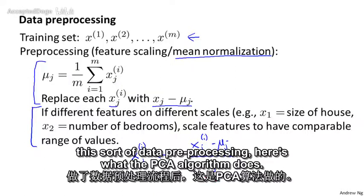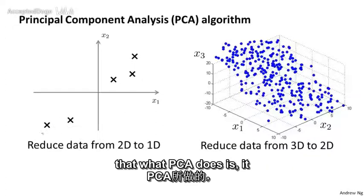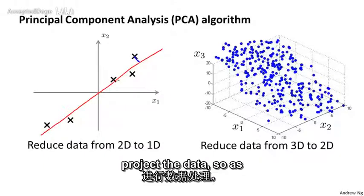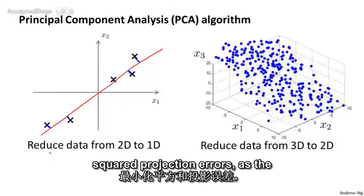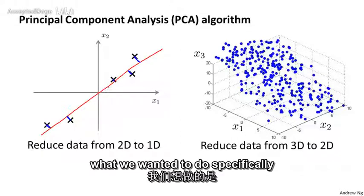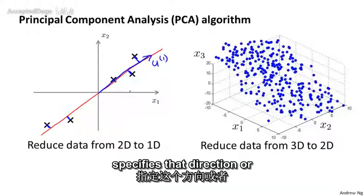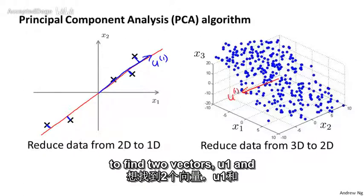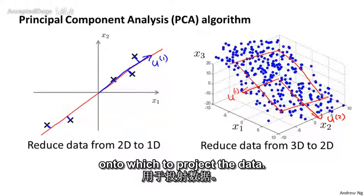Having done this data preprocessing, here's what the PCA algorithm does. PCA tries to find a lower dimensional subspace onto which to project the data, so as to minimize the squared projection errors. The sum of squared projection errors is the square of the length of those blue line segments. Specifically, we want to find a vector u1 which specifies that direction, or in the 2D case, we want to find two vectors u1 and u2 to define the surface onto which to project our data.